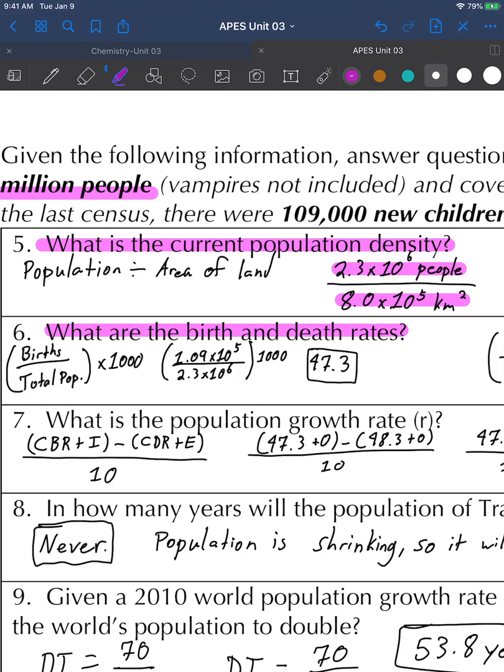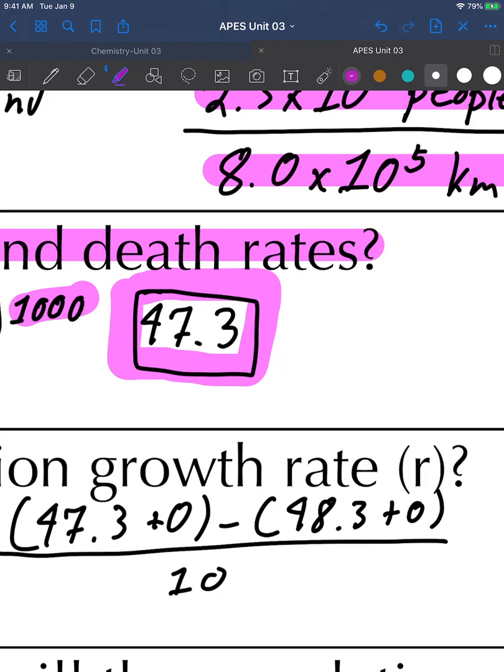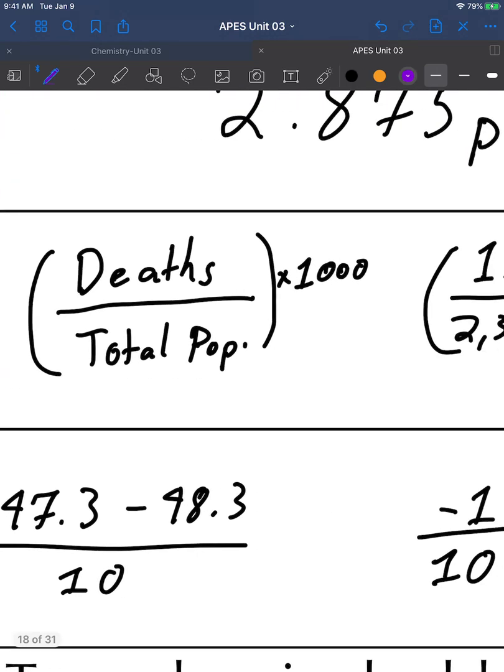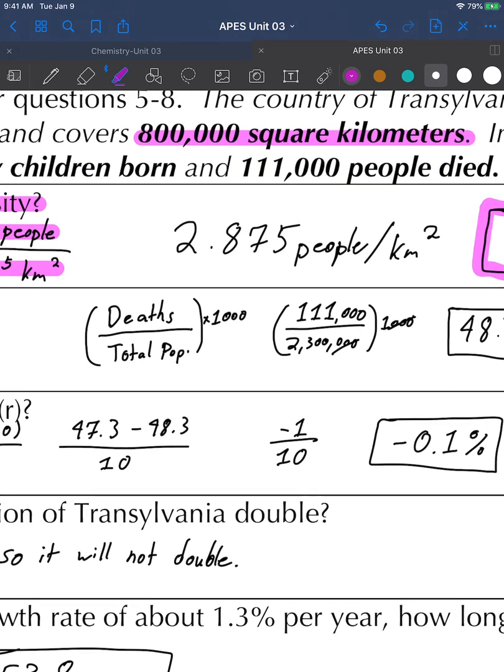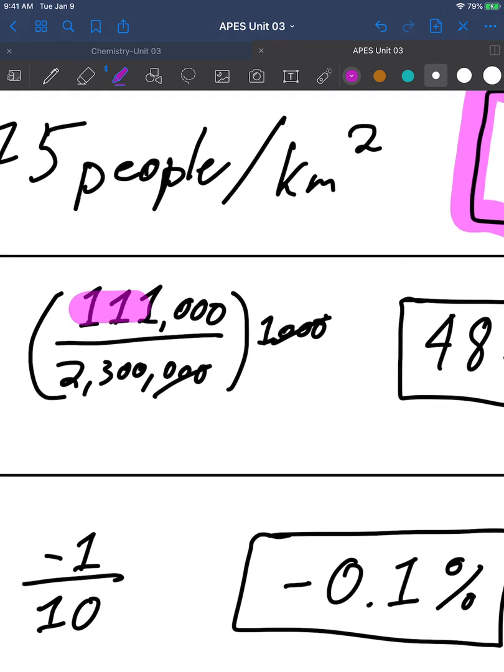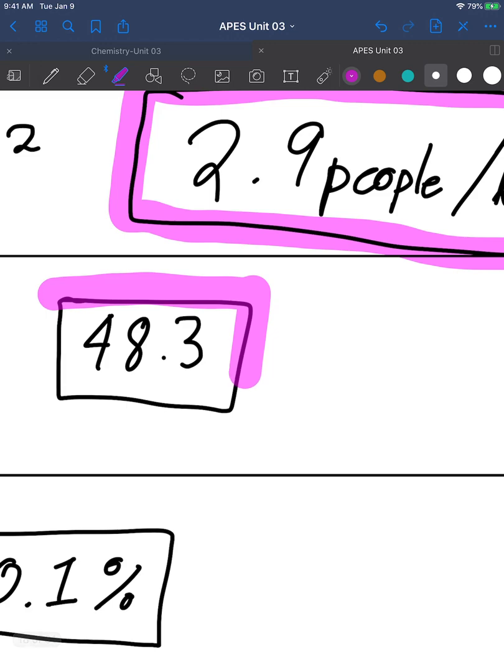Number six, what are the birth and death rates? Births are births divided by total population times 1,000. We had 109,000 births, or 1.09 times 10 to the fifth, divided by 2.3 times 10 to the sixth times 1,000 gives us 47.3. I like when you guys put units on everything, but for this there is no required unit. Hopping over to death rates, it's the exact same formula but you substitute deaths instead of births. We had 111,000 deaths, still have a population of 2.3 million times 1,000 gives us 48.3 deaths.